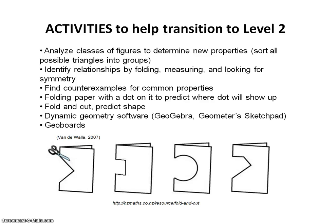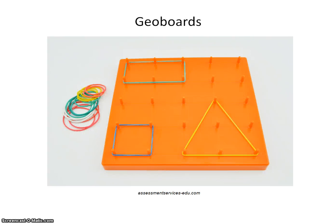Teachers can use dynamic geometry software or geoboards to help students work with different shapes. Here's a common geoboard — this is a 5x5 post geoboard, and they come in larger sizes. Students can use rubber bands to make different shapes on the geoboard; they're easy to change, overlap, and classify. Pictures made on the geoboard can then be drawn on geoboard dot paper for homework.